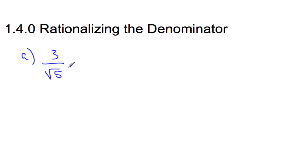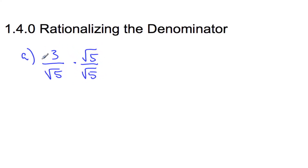So they would take this scenario and rewrite it by multiplying it times 1 — but they choose a funny looking 1. Because often times when we multiply by 1, it doesn't change the value, it just often makes it look different. The reason why I picked this one is because this is the square root on the bottom.